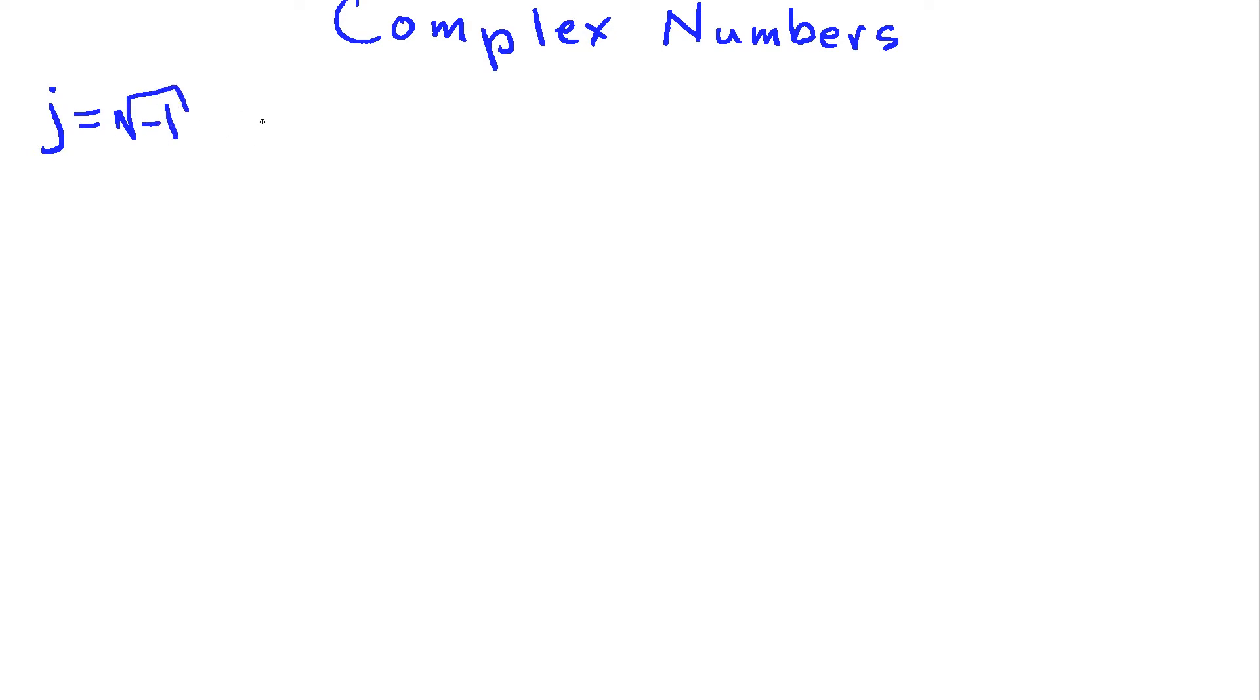We're going to call j the square root of minus 1. Now mathematicians typically use the symbol i, but it's more common in engineering to use j. Then I'm going to introduce two real numbers, a and b, and I can come up with a complex number c, which we'll write as c equals a plus jb. So a is the real part, b is the imaginary part, and the way I've expressed this number, this format is called rectangular coordinates.